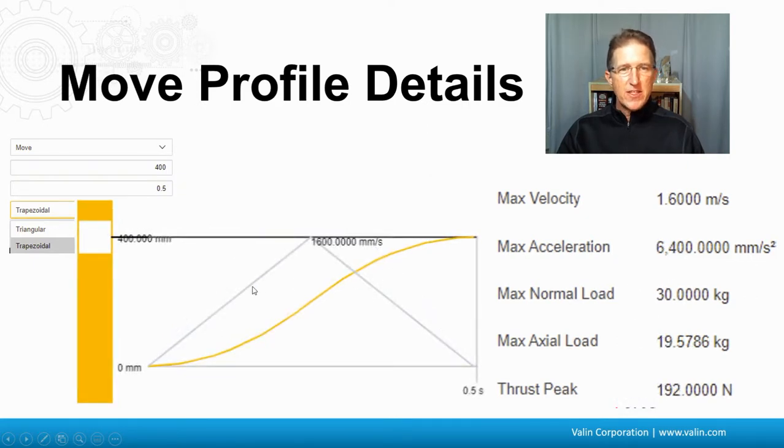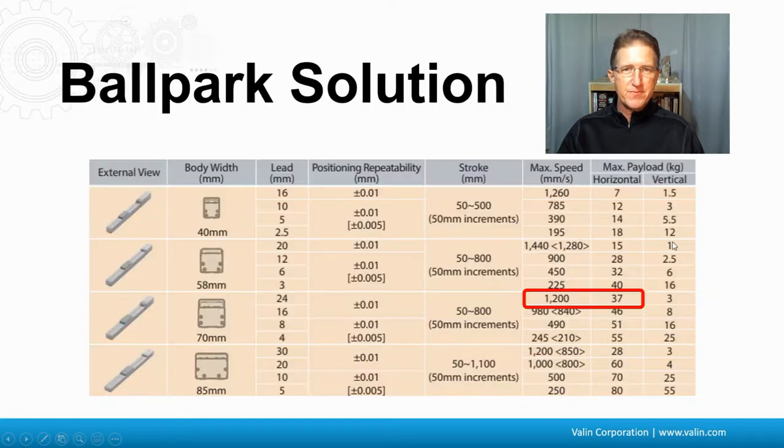I can also take a look at this one here where I looked at the triangular one. And now here's the triangular move profile. And that gives me 1,600 millimeters per second, which is now 6.4 meters per second squared for the acceleration.